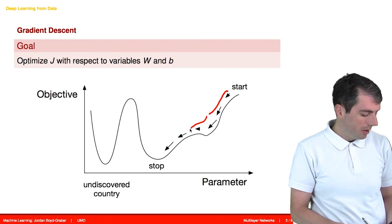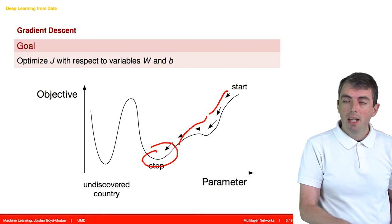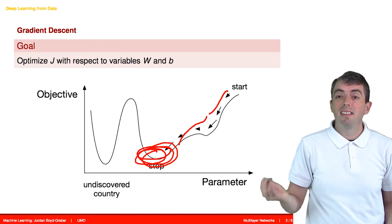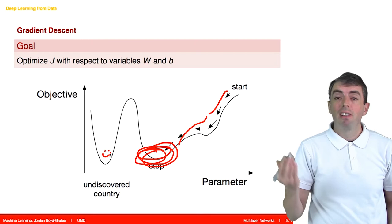Unlike logistic regression, the loss function here is totally non-convex. That means that there are places where you can get stuck, and so there may be a better solution over here that might have a lower overall error, but you won't reach it.